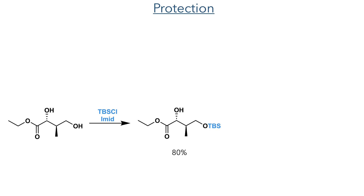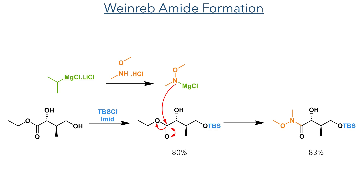Taking this forward, the primary hydroxyl group was selectively protected using TBS chloride. This is a bulky protecting group and the steric hindrance means it preferentially reacts with the more accessible primary hydroxyl group. With this in place, they then installed a Weinreb amide. The turbo-Grignard reagent first reacts with dimethylhydroxylamine and the resulting nucleophile adds to the ester, eliminating ethoxide to form the Weinreb amide.